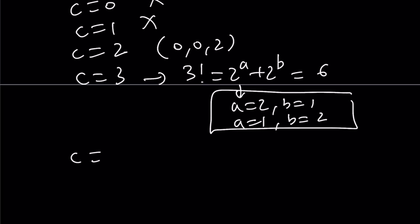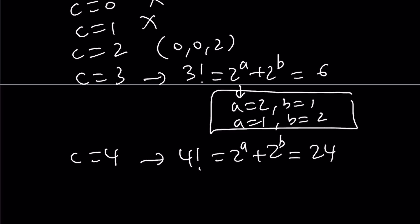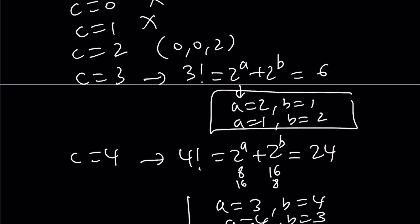For c=4: 4 factorial = 24 = 2^a + 2^b. We can write 24 = 8 + 16 = 2^3 + 2^4. So we get a=3, b=4 or a=4, b=3 — another pair of solutions: (3, 4, 4) and (4, 3, 4).